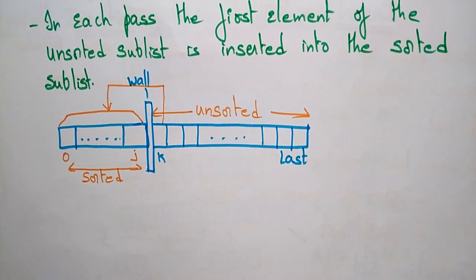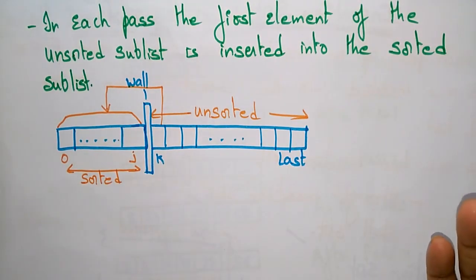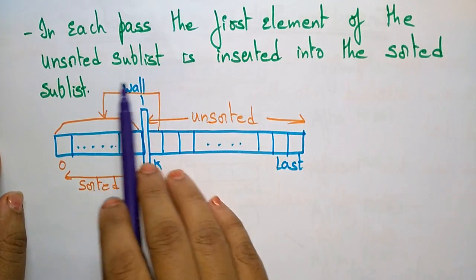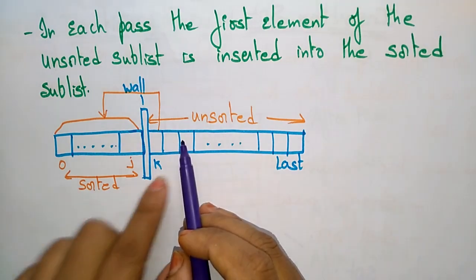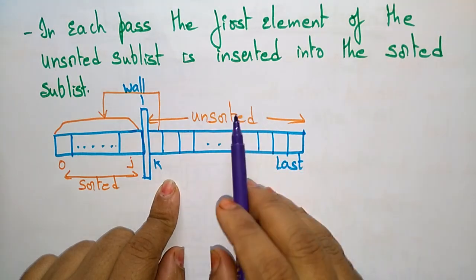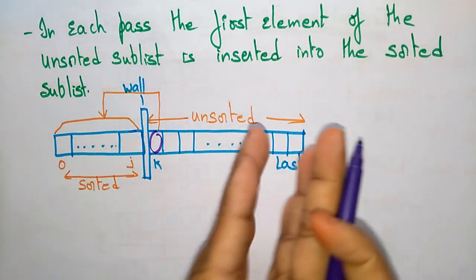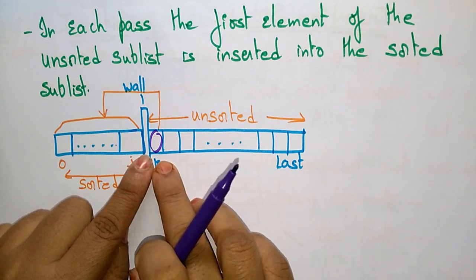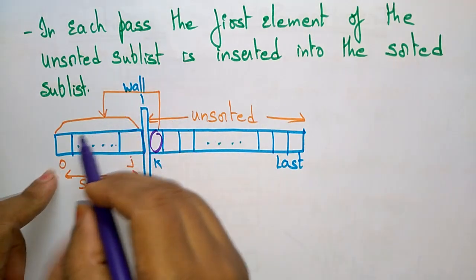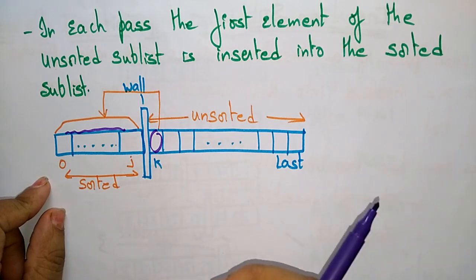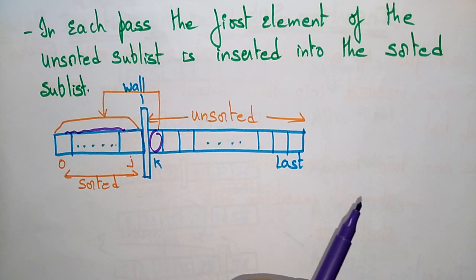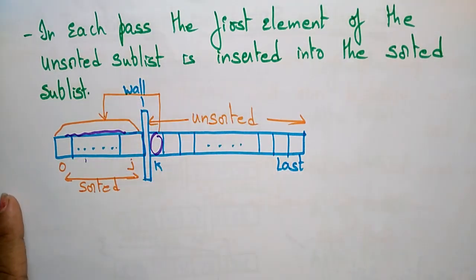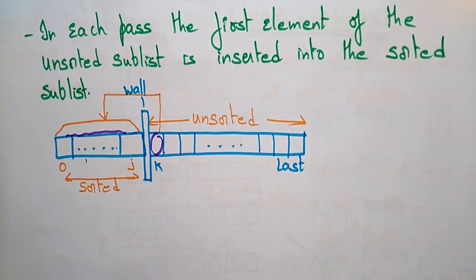Before going to an example, let us see how the stride insertion sort will be done. In stride insertion sort, each pass the first element of the unsorted sublist is inserted into the sorted sublist. So for whatever iteration you are taking, the first element of the unsorted list has to be inserted into the sorted sublist based on greater than and less than comparisons.